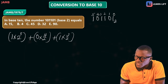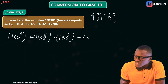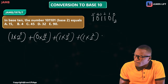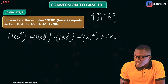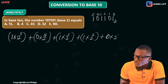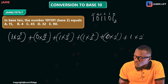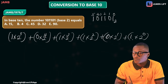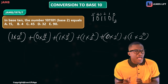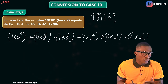Continuing the expansion: plus 1 times 2 raised to power 2, plus 0 times 2 raised to power 1, plus 1 times 2 raised to power 0. So we multiply each digit by the base raised to its positional power.